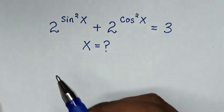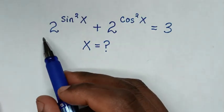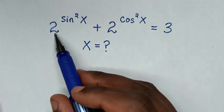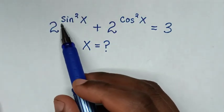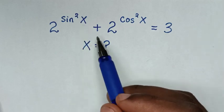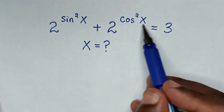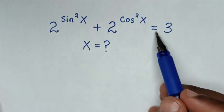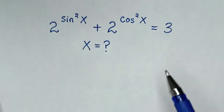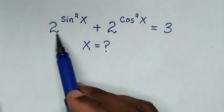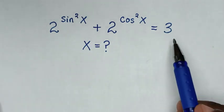Hello, you are welcome to solve this trigonometry problem: 2 to the power of sin²x plus 2 to the power of cos²x is equal to 3. We need to find the values of x from this equation.